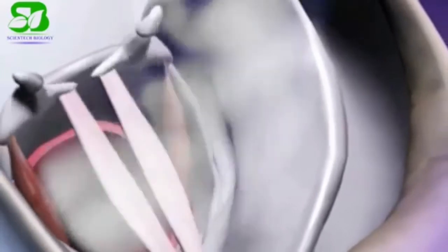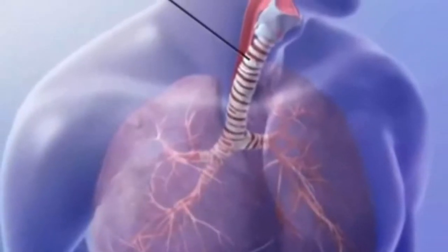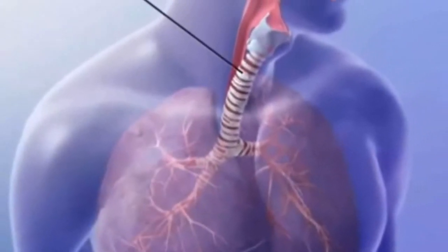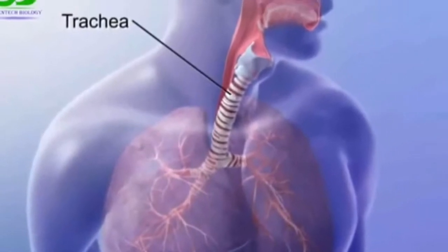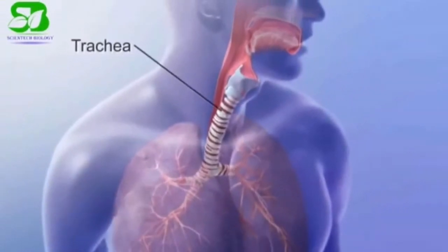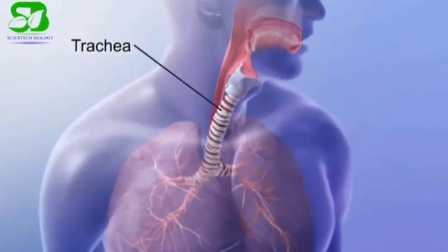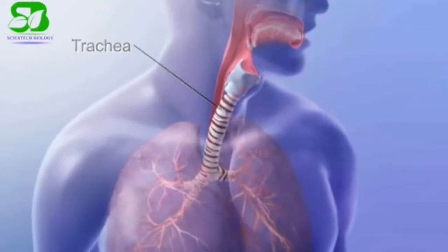The vocal cords are a membrane that can stretch. The voice box — the larynx — contains the vocal cords and connects to the windpipe below.